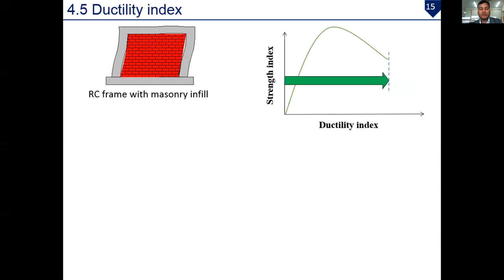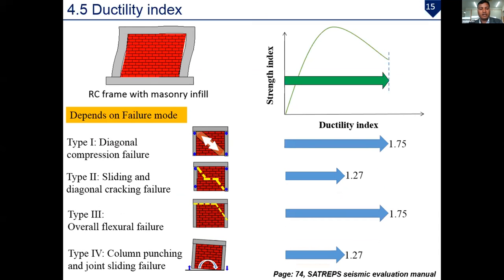For the ductility index, we consider the RC frame with masonry infill as a unit. Ductility index values were proposed based on experiments, team discussions, and damage observations from previous studies. For Type 1 (diagonal compression failure), the ductility index is 1.75. For Type 2 (sliding and diagonal cracking failure), it is 1.27. For Type 3 (wall flexural failure), it is 1.75. For Type 4 (column punching and joint sliding failure), the ductility index is 1.27.